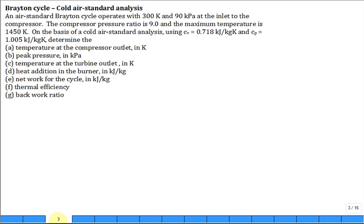This problem deals with cold air analysis. The Brayton cycle starts, it comes in at 300 Kelvin and 90 kilopascal at the inlet to the compressor. The compressor pressure ratio is 9 and the maximum temperature is 1450 Kelvin, and perform a cold air standard analysis using that value of specific heat, C sub V and C sub P, which gives us a K of 1.4. Determine things like what is the temperature at the compressor outlet.